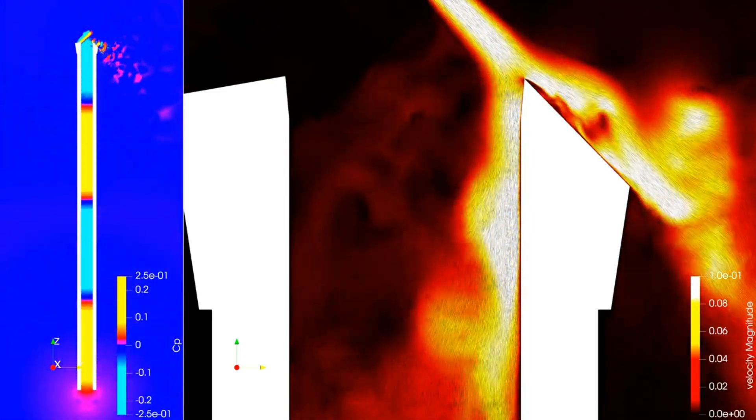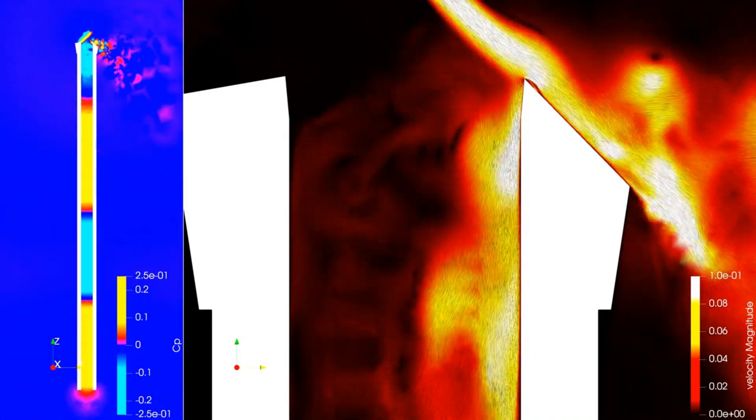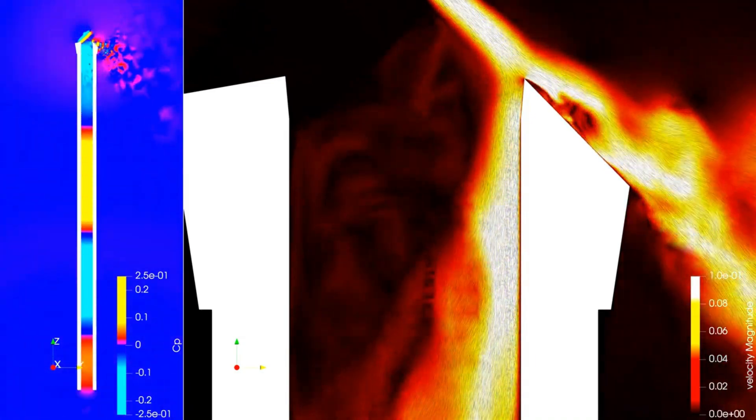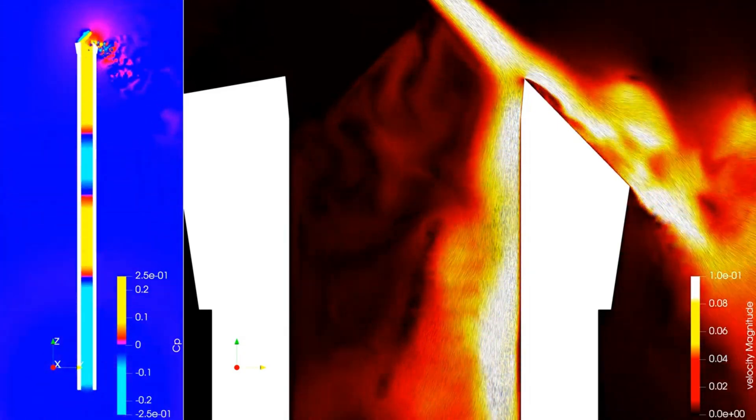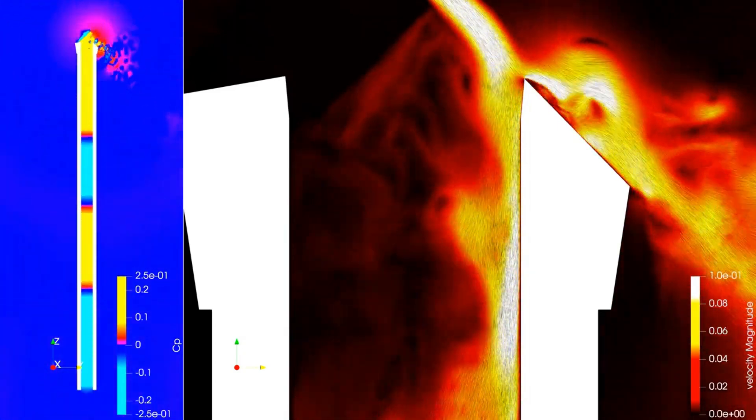So this unsteady pressure source coupled with the reflection of the pressure wave at the opening end of the flute essentially creates a self-coupled oscillator.